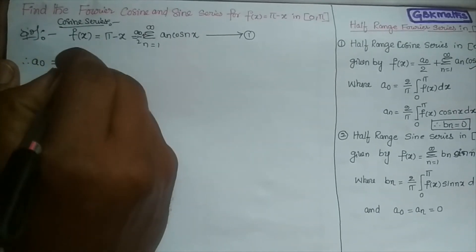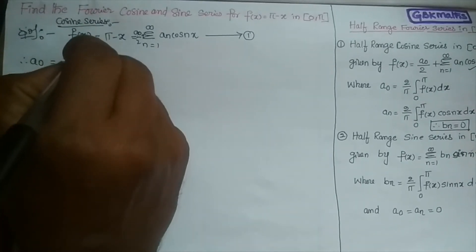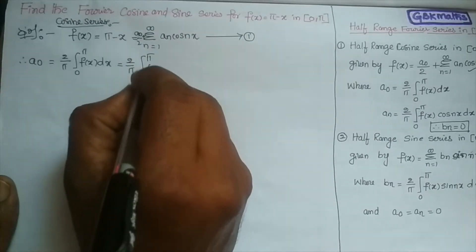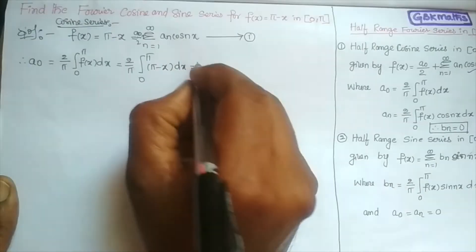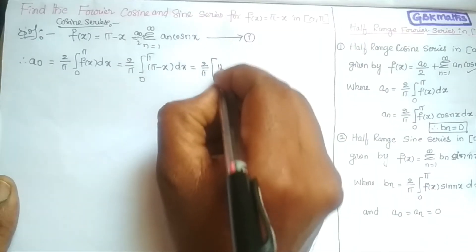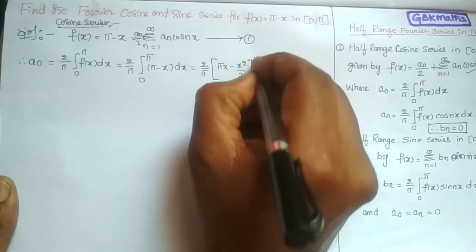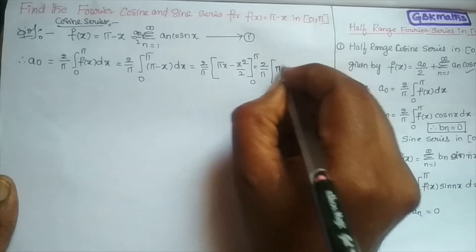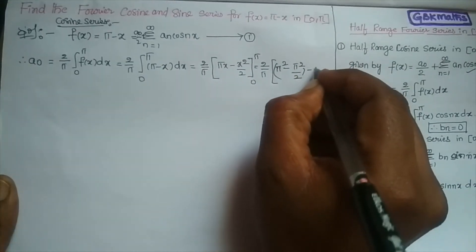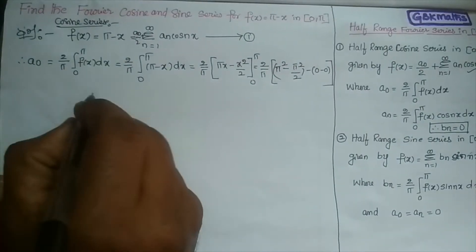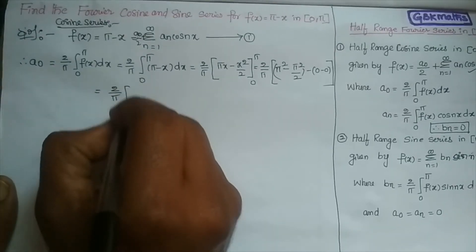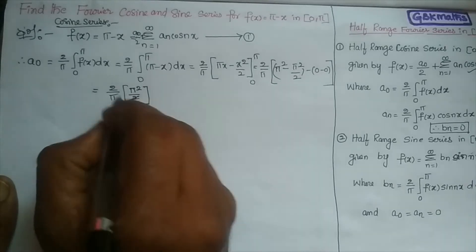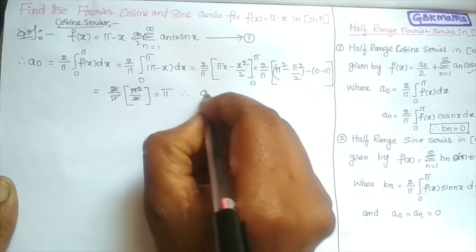a₀ = (2/π) integral 0 to π f(x) dx. Substituting f(x) = π - x: a₀ = (2/π) integral 0 to π (π - x) dx = (2/π) [πx - x²/2] from 0 to π. Substituting the limits: (2/π) into (π² - π²/2) = (2/π) into (π²/2). The 2's cancel and one π cancels, therefore a₀ = π.